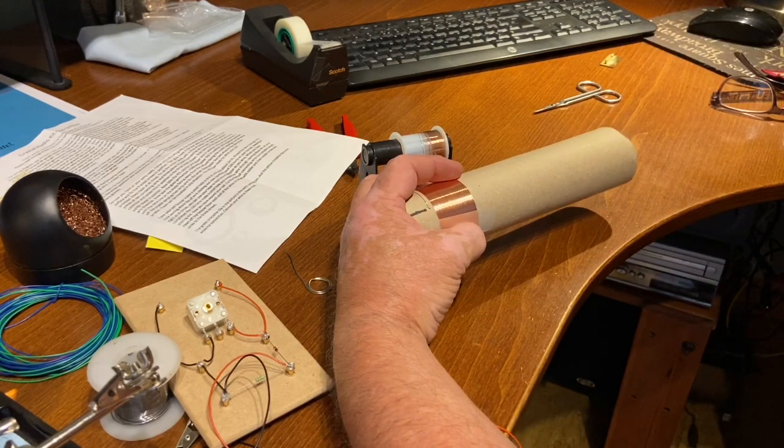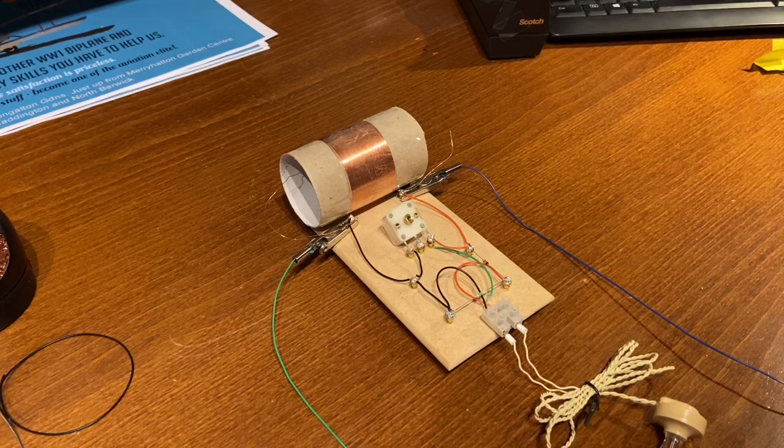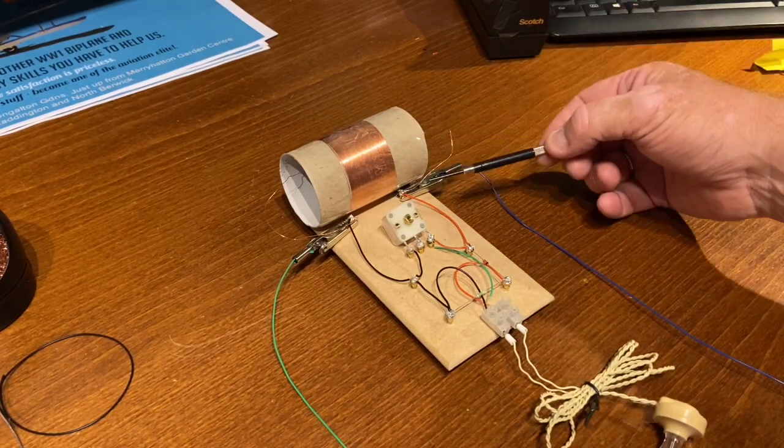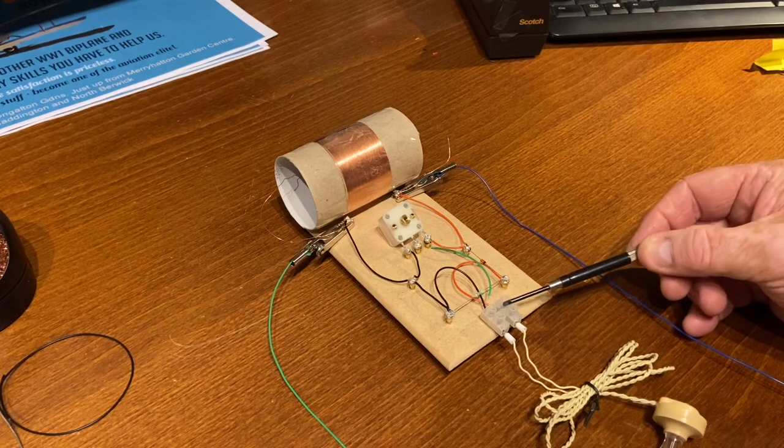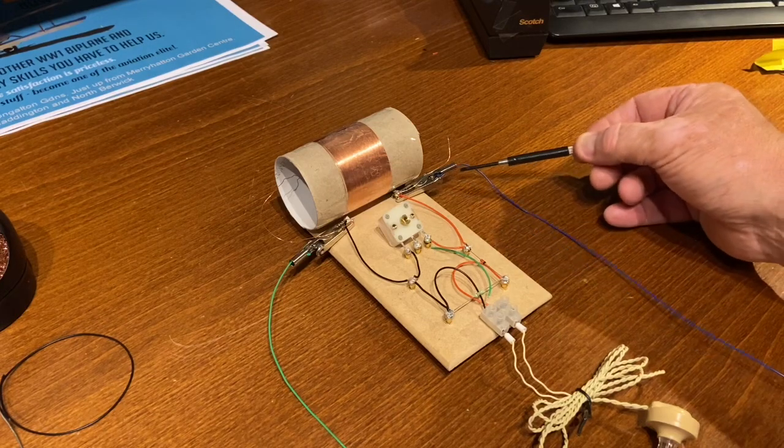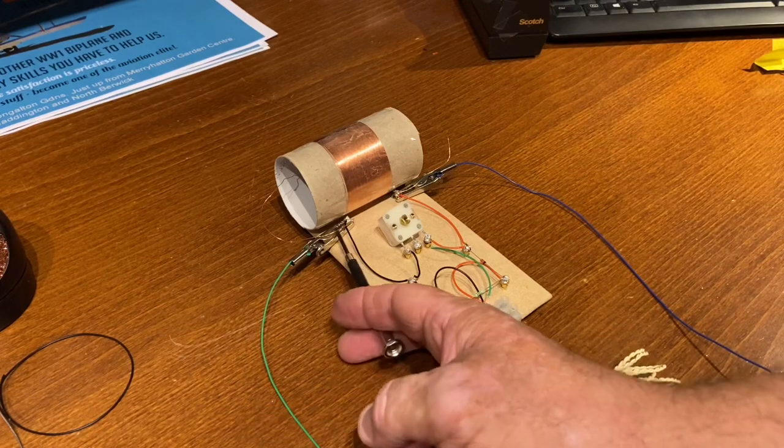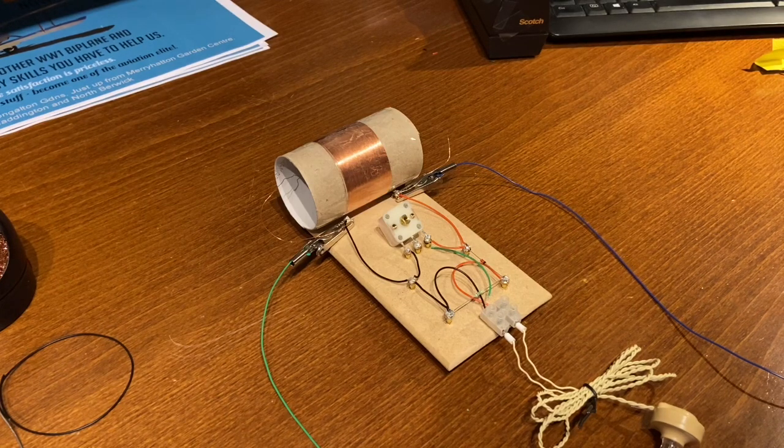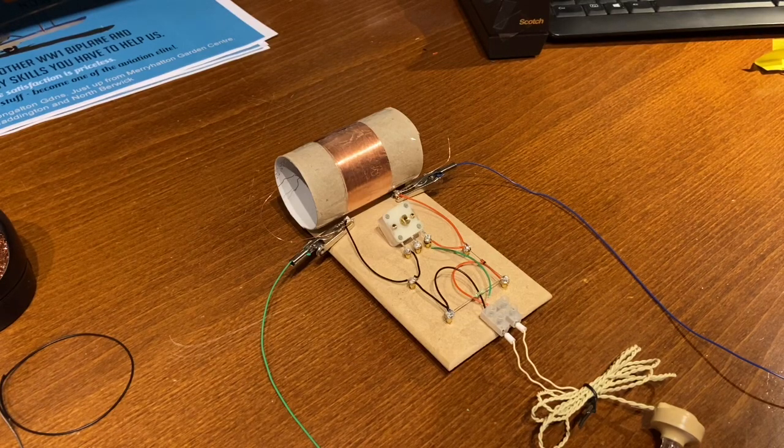And so we're done. That's the whole thing assembled. I've taken the cardboard tube and I've glued it with hot glue to the board. I've also hot glued a little terminal here so that I can connect the earpiece up. I have the antenna wire crocodile clipped onto this side, and the earth wire will go to a pole that I drive into the ground to earth the device. And then we'll see if it works.